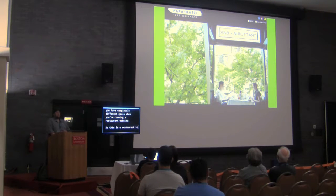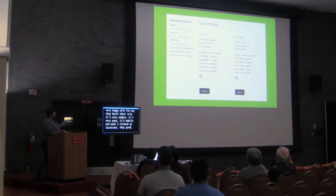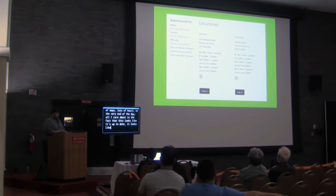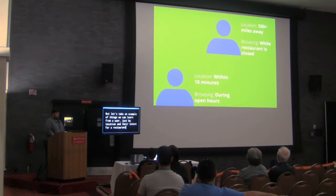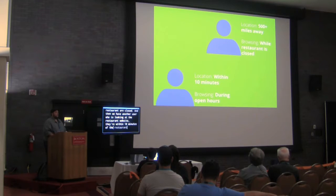I'm using Paparazzi, an Italian restaurant in Boston my wife and I love, as an example. I'm happy with how they built their site — it's simple, easy, and mobile. When I clicked on locations, they gave me phone numbers, addresses, maps, and hours multiple times. All I care about is that it looks up to date, accurate, and I can get in and out. Now let's look at what we can learn from a user based on location and intent: one user is 500 miles away viewing the site while the restaurant is closed, another is within 10 minutes while it's open.